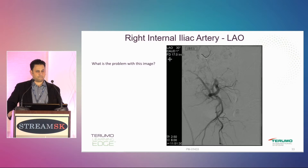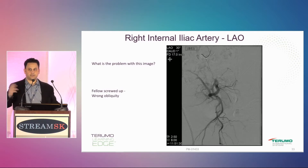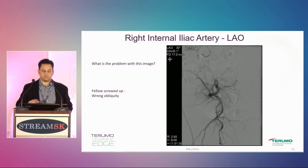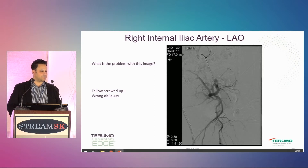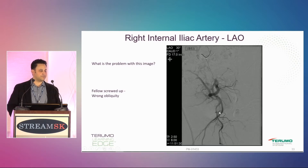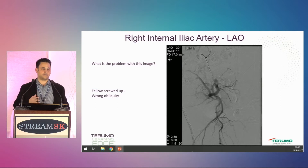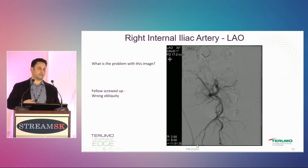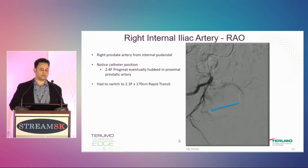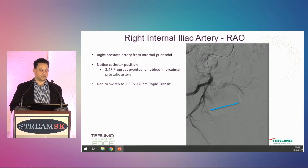The injection on the right side — does anyone know what the problem with this one is? My fellow used the wrong obliquity; this was actually a contralateral oblique of the right. Oddly enough, you can still see the prostate artery origin pretty well on this obliquity. It's great for splaying out the anterior and posterior divisions, but not necessarily great for showing the prostate origin. It worked out not badly, but we still repeated it in the ipsilateral oblique, and here you can again see the prostate artery.